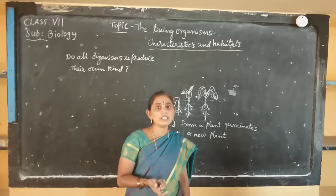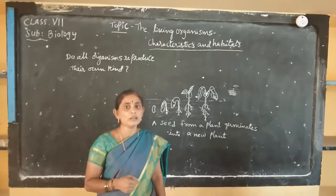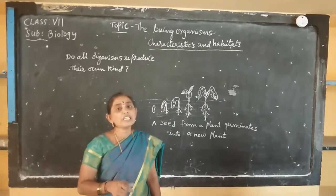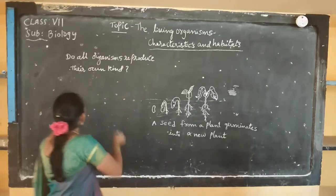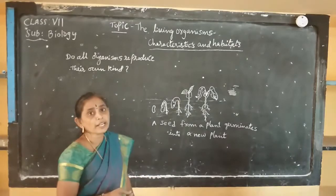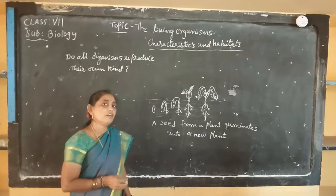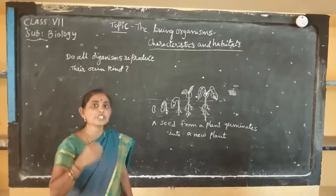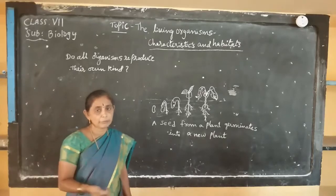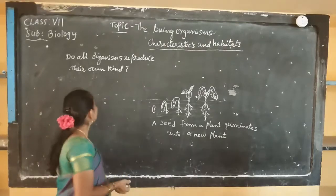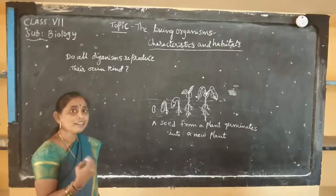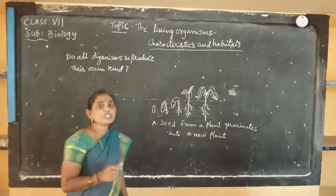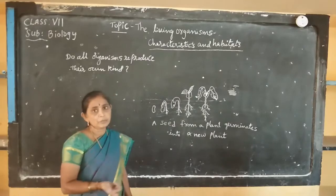Some plants store their wastes in different parts of the plant. Now we will discuss about the topic: do all organisms reproduce their own kind? Yes, all organisms reproduce their own kind. But the mode of reproduction is different in plants and animals.